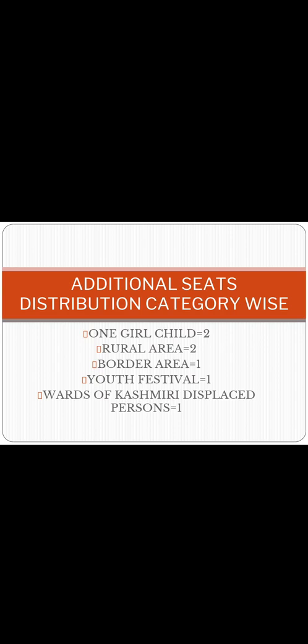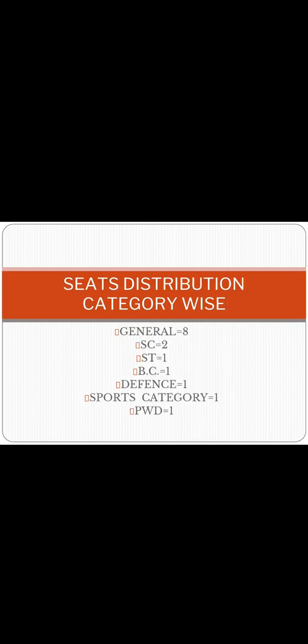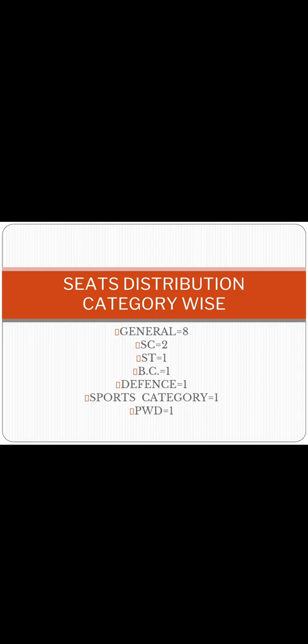Now I'll discuss the seat distribution category-wise, which is extremely important. In the General category there are 8 seats, in SC category 2 seats, in ST category 1 seat, in BC category 1 seat, in Defense category 1 seat, in Sports category 1 seat, and in PW category 1 seat.